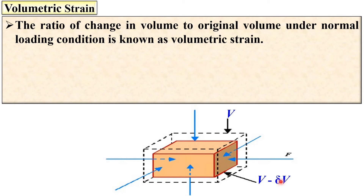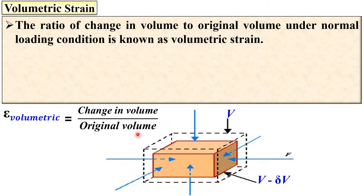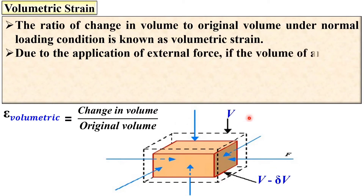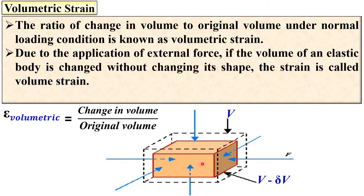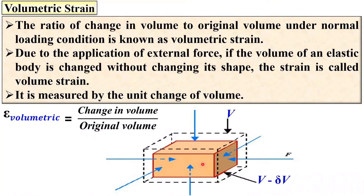The change in volume is delta V, since this is the initial volume and this is the final volume. The change in volume due to normal loading is delta V. According to this definition, volumetric strain is the ratio of the change in volume to the original volume — that is, volumetric strain equals change in volume divided by original volume. Furthermore, if the volume of an elastic body changes without changing its shape under external loading, the strain is called volumetric strain. In volumetric strain, the shape should not be deformed under loading. It is measured by the unit change of volume.